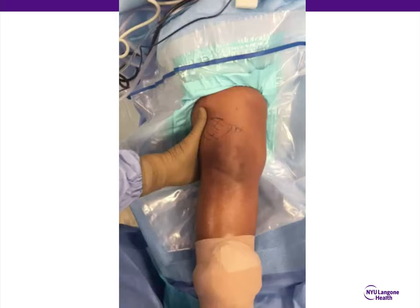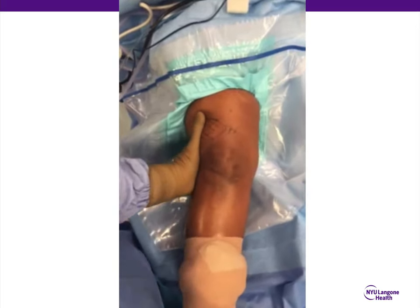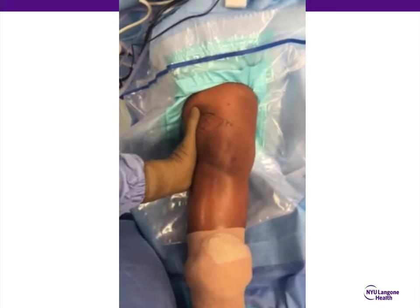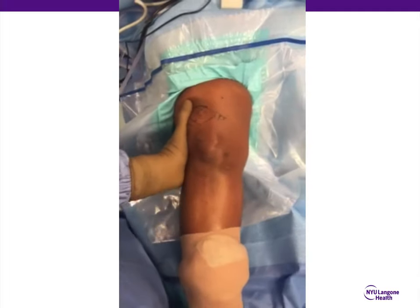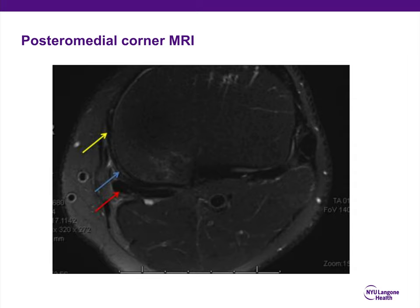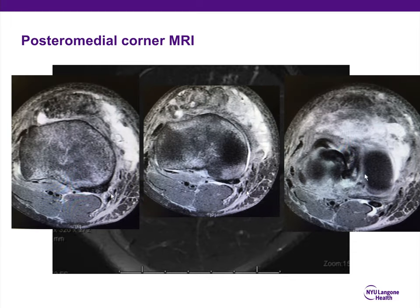This video demonstrates a patient with a posteromedial corner injury. You can see significant opening with valgus stress at both 0 degrees and 30 degrees — there is opening in full extension as well as in flexion. When looking at posteromedial corner MRIs, it's important to identify the superficial MCL, the posterior oblique ligament, and the semimembranosus. On this axial cut, the red arrow indicates the semimembranosus, the blue arrow demonstrates the posterior oblique ligament, and the yellow arrow demonstrates the superficial MCL insertion.